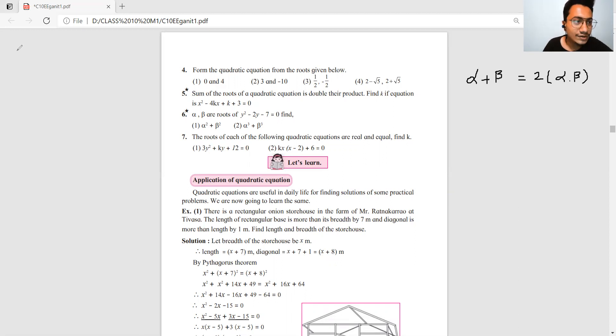The equation is x square minus 4kx plus k plus 3 equals zero. Now we compare this equation by comparing with the standard form ax square plus bx plus c equals zero.